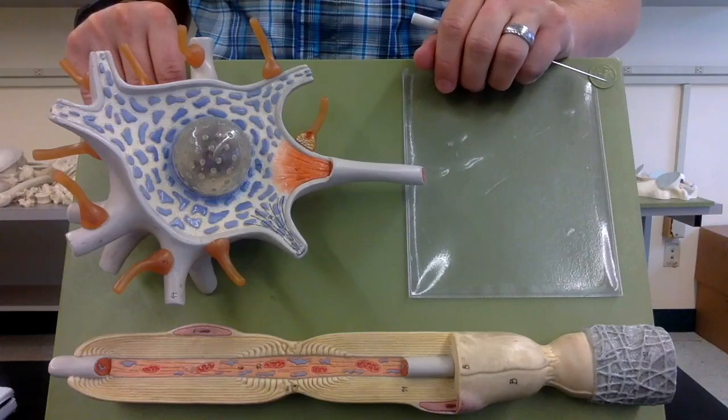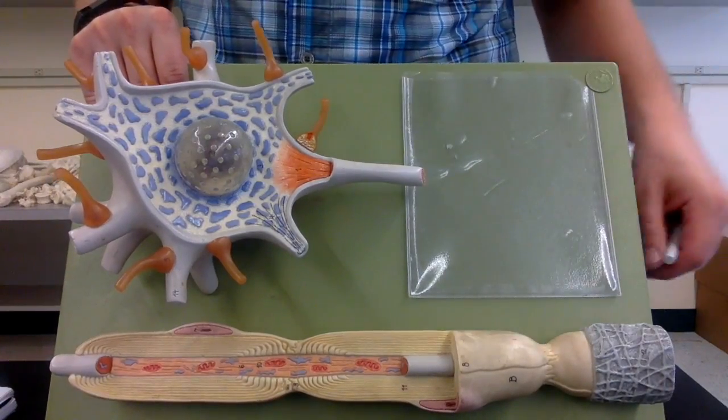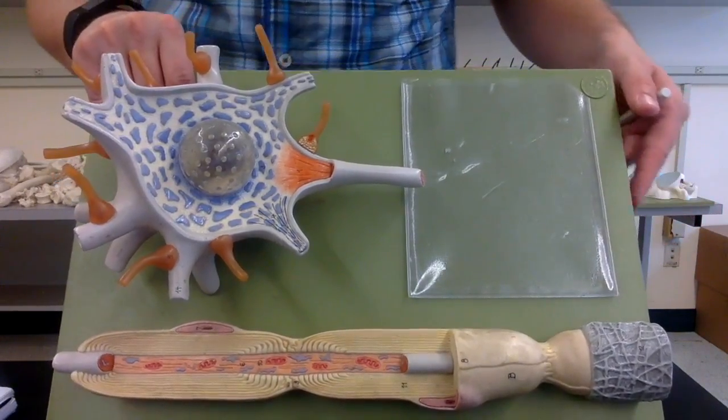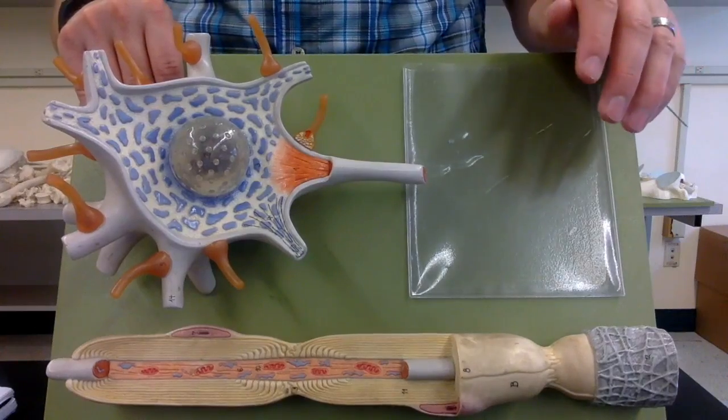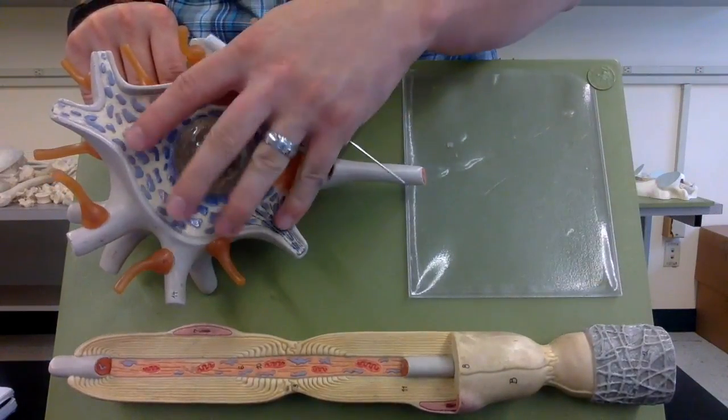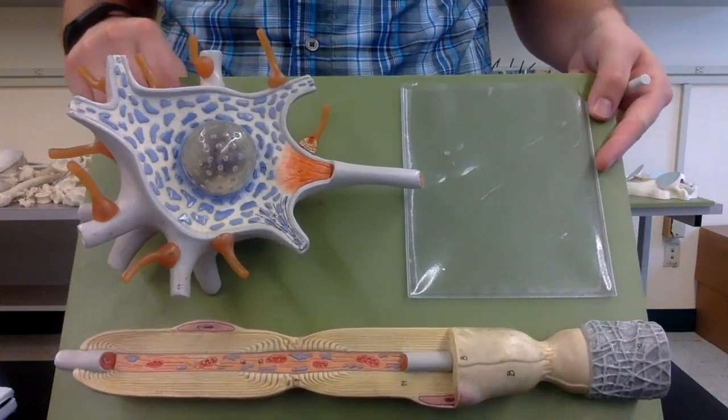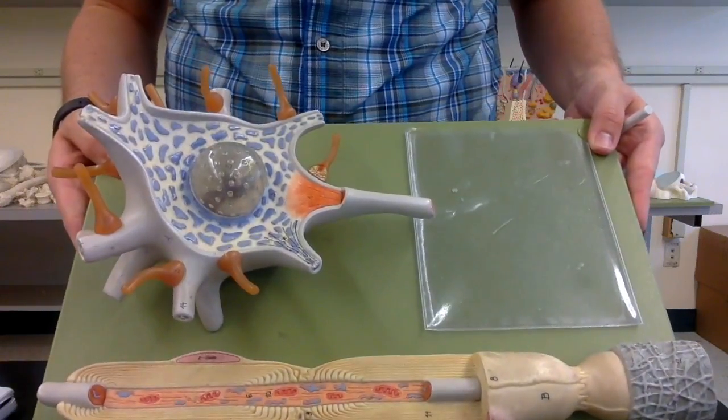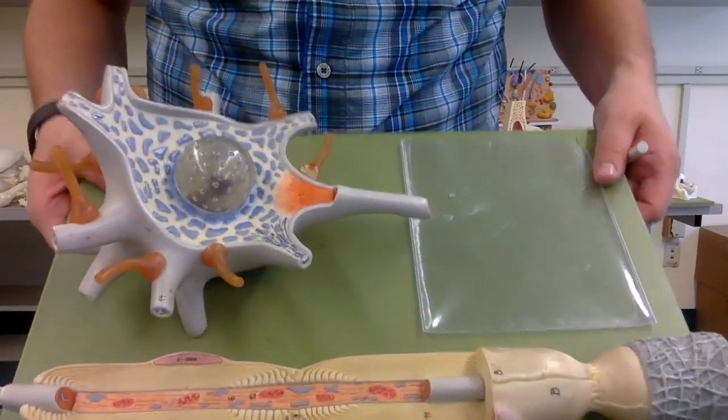Lastly, we'll cover the neuroglia. Neuroglia are helper cells, and so neuroglia actually outnumber neurons 10 to 1 in the nervous system. Crazy, there's a lot more help than the actual neurons.